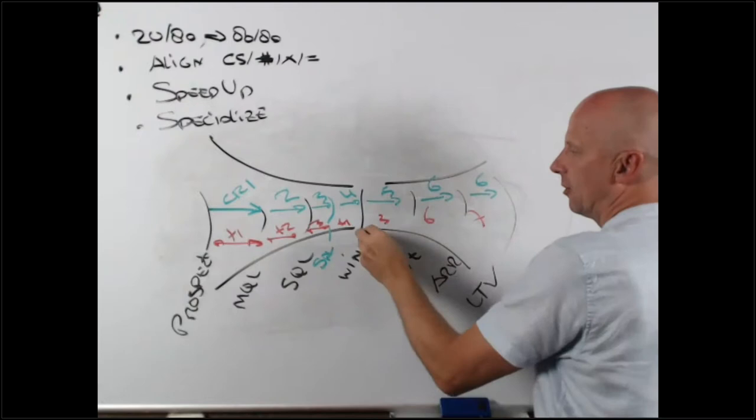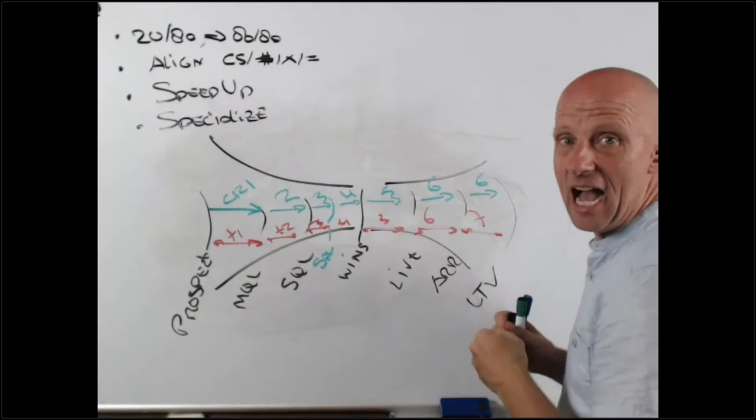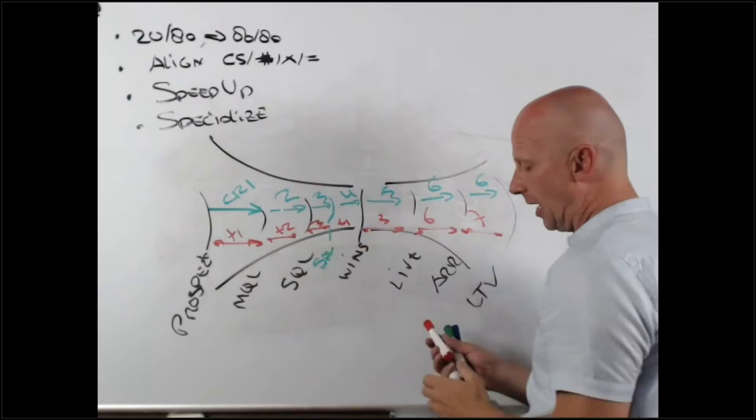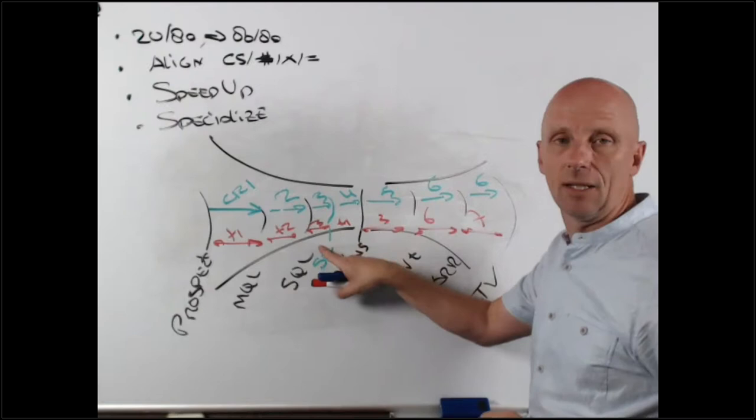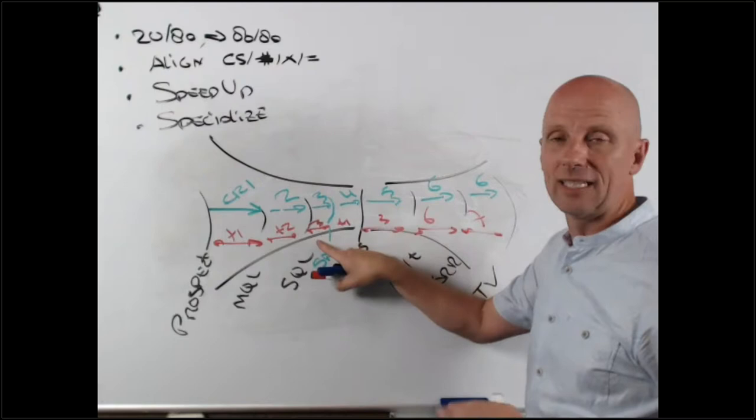I know that in order from MQL to SQL, I rely on conversion rate number 2, and it's going to take me t2 to get that. In order to get the amount of qualified opportunities, sales accepted leads, I got conversion rate number 3, and it's going to take me whatever, a day to get there. Everything down here, this is math.